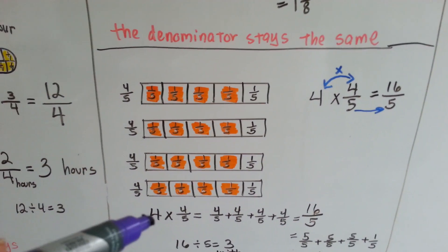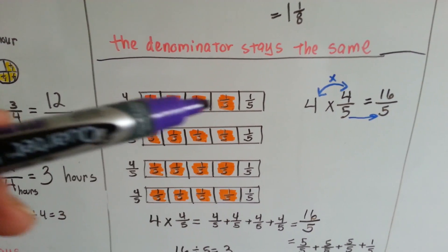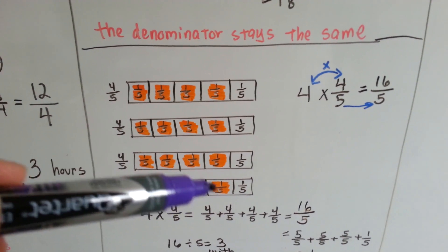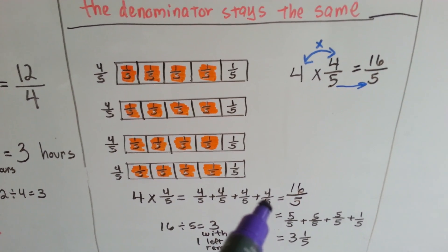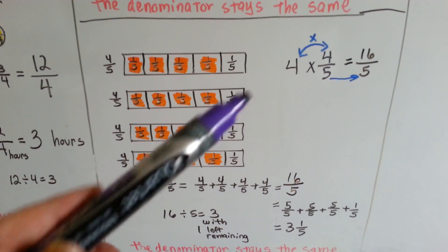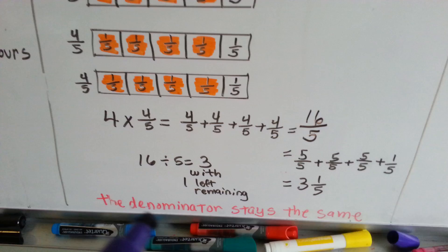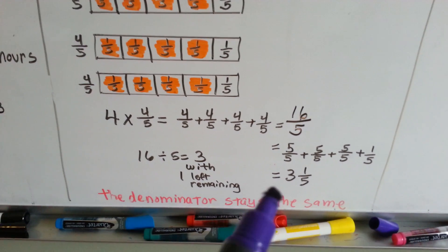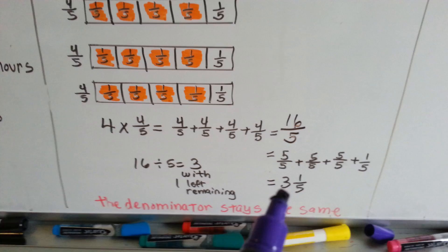Let's try 4 times 4 fifths. Here's a bar of 4 fifths, and another one and another one and another one — 5 fifths is a whole, but there's only 4 fifths and we've got it 4 times. Counting gives 16 fifths. With repeated addition: 4 fifths plus 4 fifths plus 4 fifths plus 4 fifths — 4 plus 4 is 8, plus 4 is 12, plus 4 is 16 fifths. We can also multiply: 4 times the numerator 4 gives 16 fifths. Simplifying, 5 fits into 16 three times with a remainder of 1, giving us 3 and 1 fifth. Keep the denominator the same.